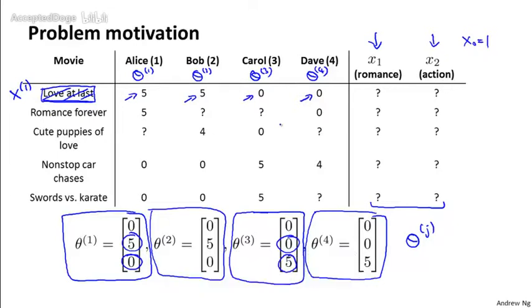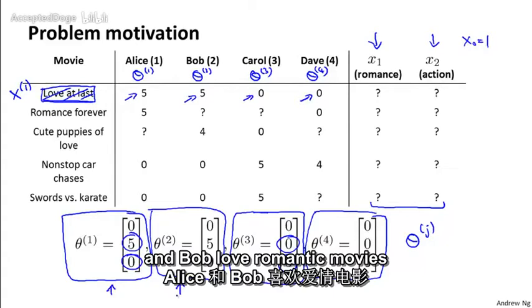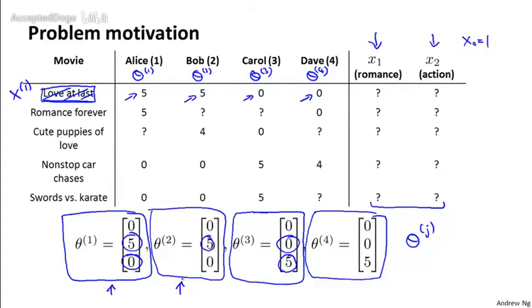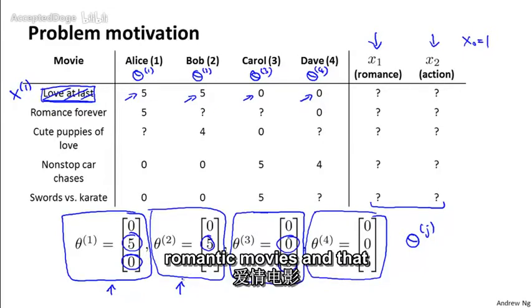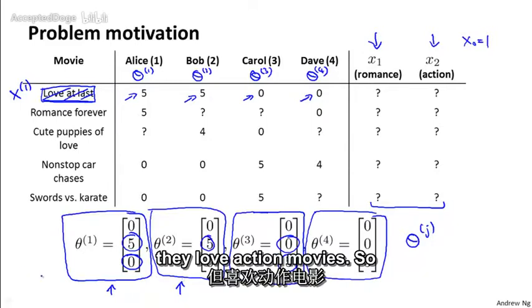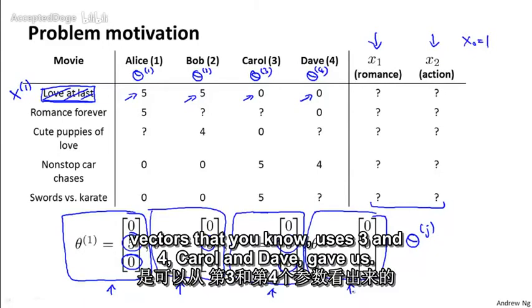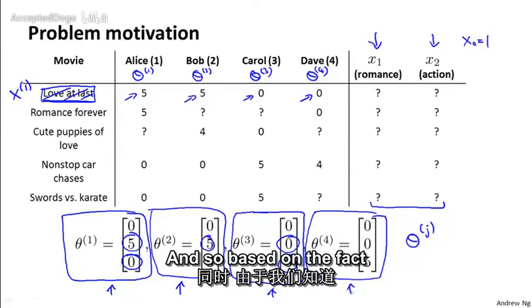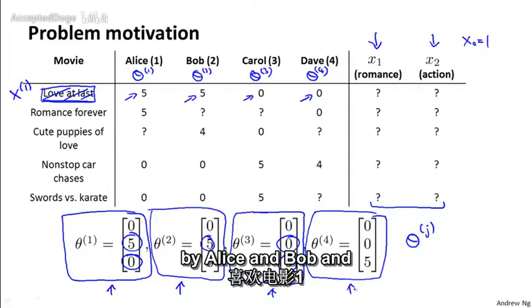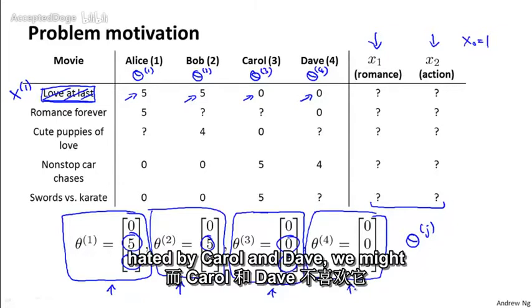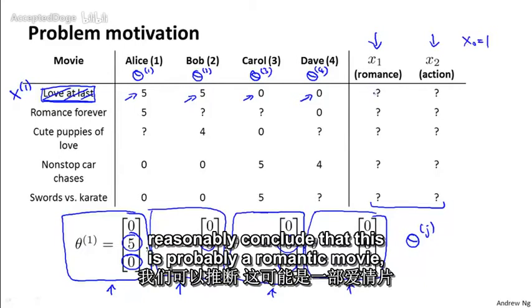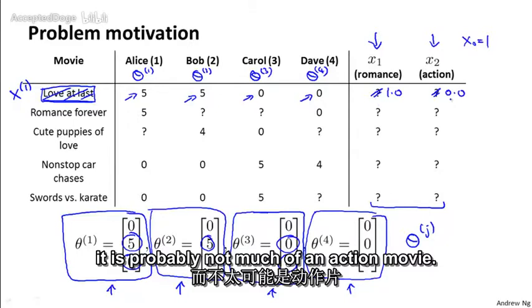So what can we infer? Well, we know from the feature vectors that Alice and Bob love romantic movies because they told us that. The fives here. Carol and Dave, we know that they hate romantic movies and that they love action movies. So, because those are the parameter vectors that users three and four Carol and Dave gave us. And so based on the fact that movie one is loved by Alice and Bob and hated by Carol and Dave, we might reasonably conclude that this is probably a romantic movie. And it's probably not much of an action movie.